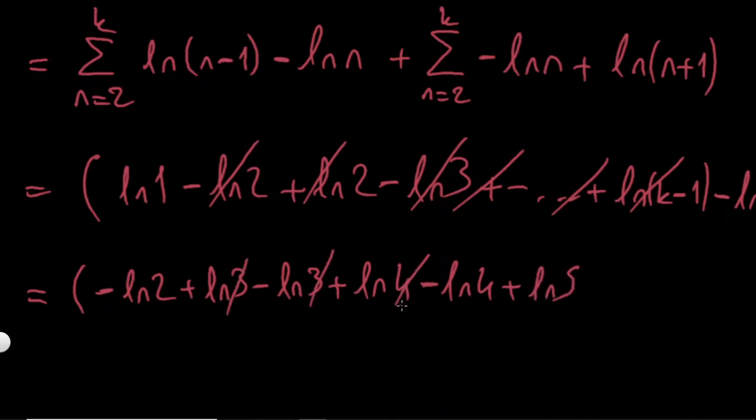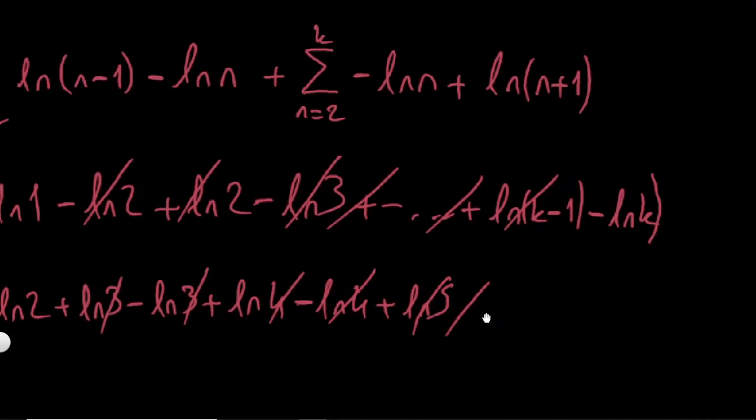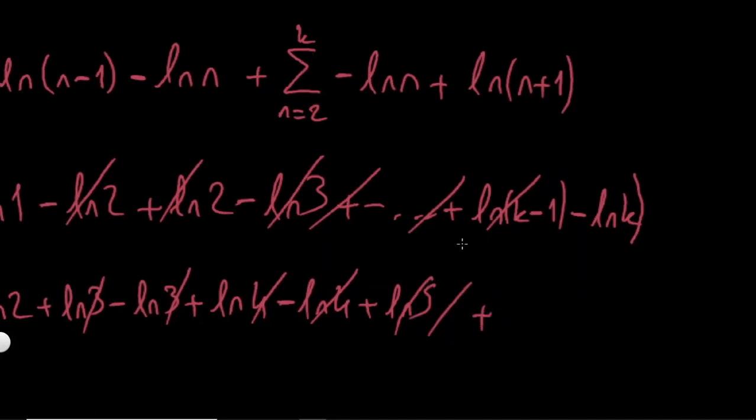All of the terms here are cancelling out. And this is going up to, if I put minus ln k and plus ln k plus 1. And this term is also cancelling. Everything on the inside cancels out.